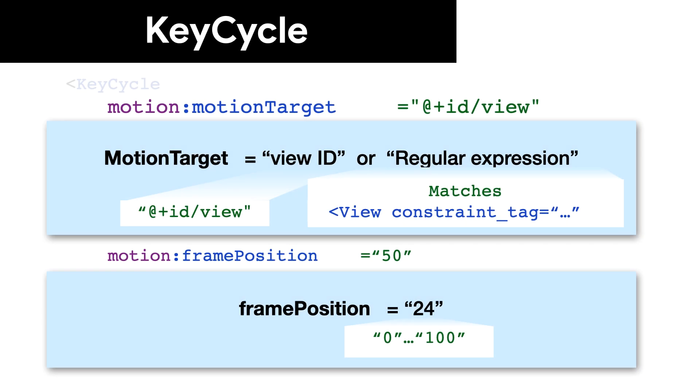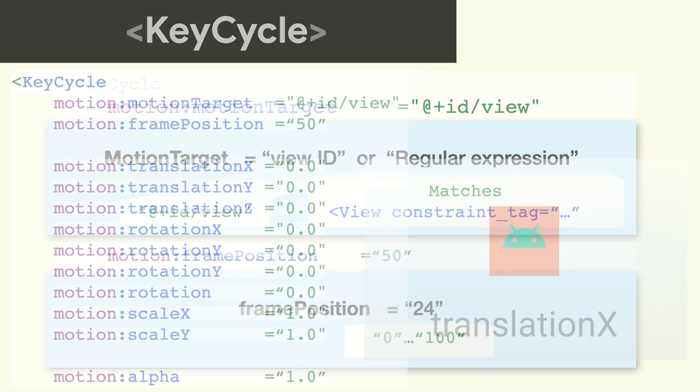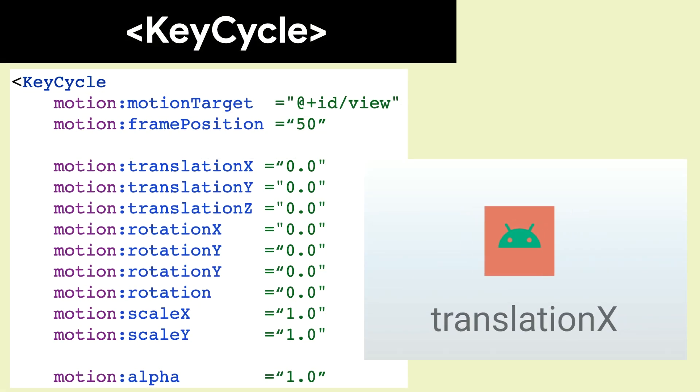Similar to KeyPosition, we must define the target and the position, and they're defined similarly. In fact, the majority of the attributes are identical to KeyAttribute. In this case, we just caused that value to oscillate.